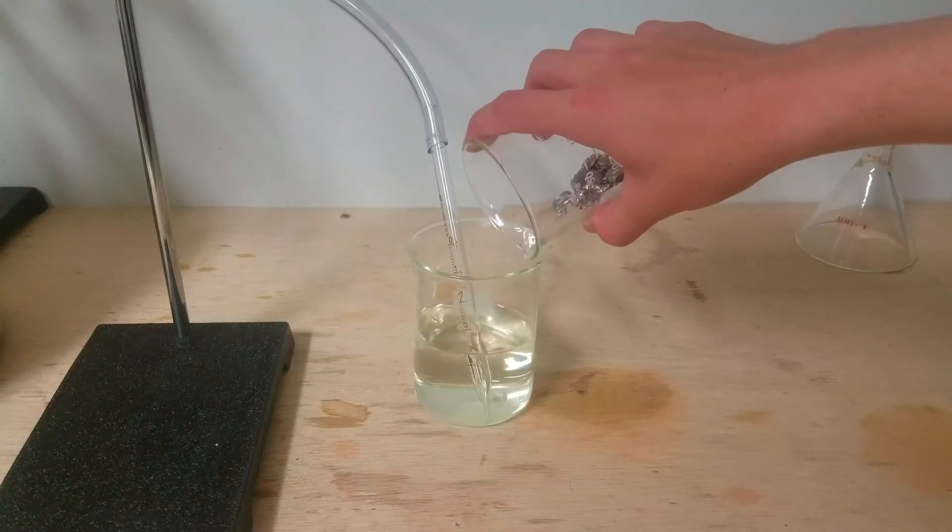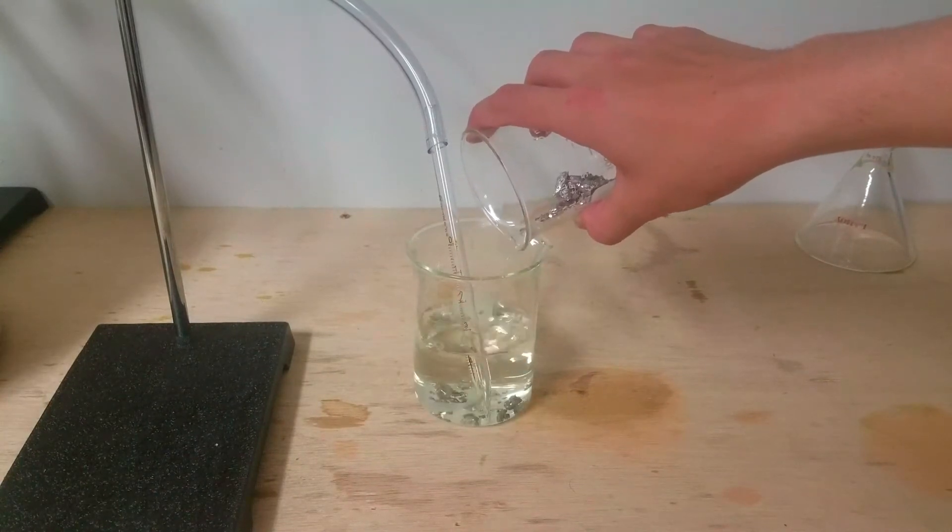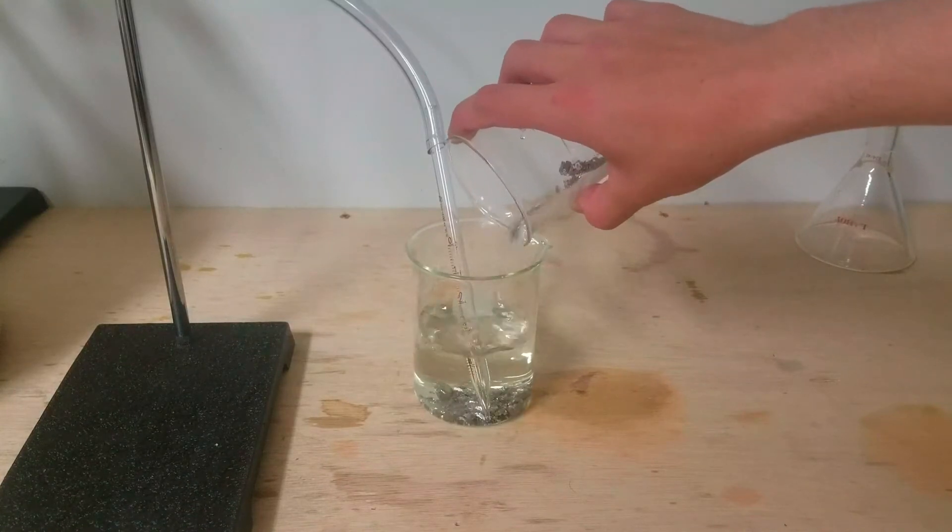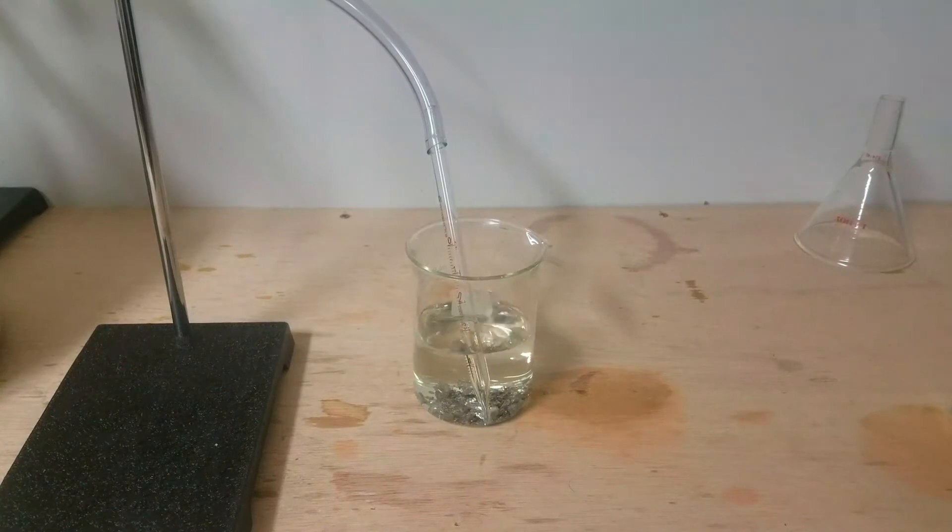I then dumped in the bismuth metal and let it sit for a while. Honestly, I was expecting a slightly vigorous reaction, but I was soon disappointed when nothing really happened. After a few minutes of nothing happening, I added a lot more distilled water and a few drops of the bromothymol blue indicator. The solution turned much more yellow, indicating a pH of about 2 or less.